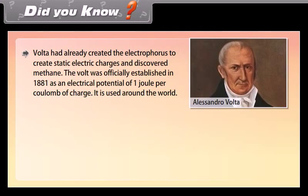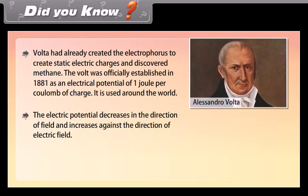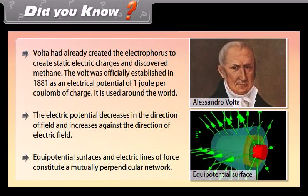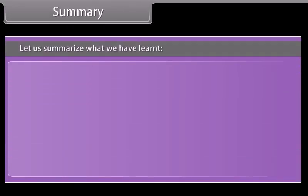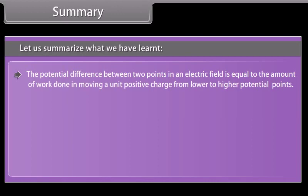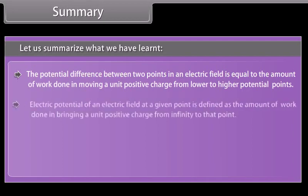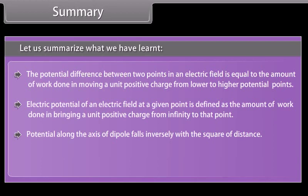Did you know? Volta had already created the Electrophorus to create static electric charges and discovered methane. The volt was officially established in 1881 as an electrical potential of 1 joule per coulomb of charge, and it is used around the world. The electric potential decreases in the direction of the field and increases against the direction of the electric field. Equipotential surfaces and electric lines of force constitute a mutually perpendicular network. The potential difference between two points equals the work done in moving a unit positive charge from lower to higher potential. Electric potential is the work done in bringing a unit positive charge from infinity to that point. Potential along the axis of a dipole falls inversely with the square of distance.